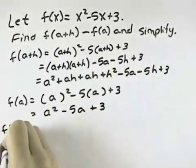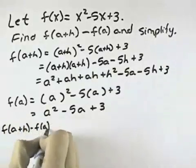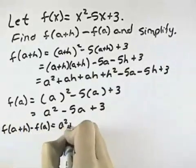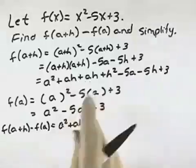But what we wanted was f of a plus h minus f of a, so that was a squared plus ah. If we combine those two,